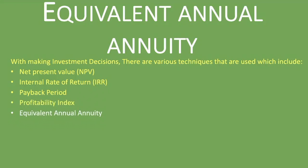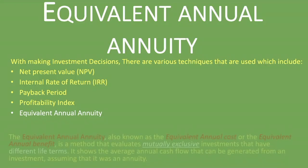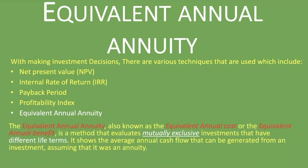The equivalent annual annuity, also known as the equivalent annual cost or the equivalent annual benefit, is a method that evaluates mutually exclusive investments that have different life terms. The equivalent annual cost focuses on costs incurred over the investment's lifetime, while the equivalent annual benefit refers to benefits received.